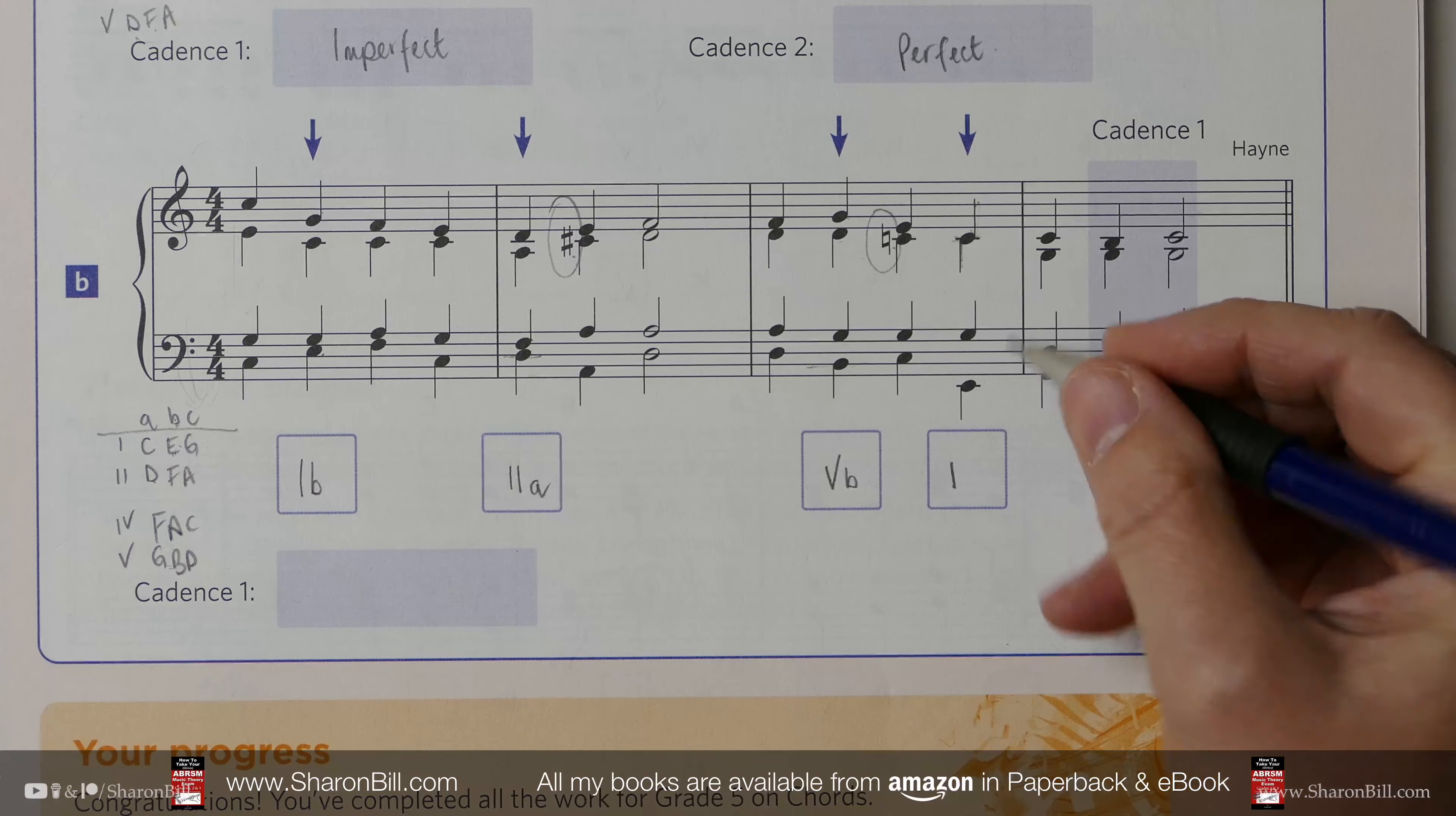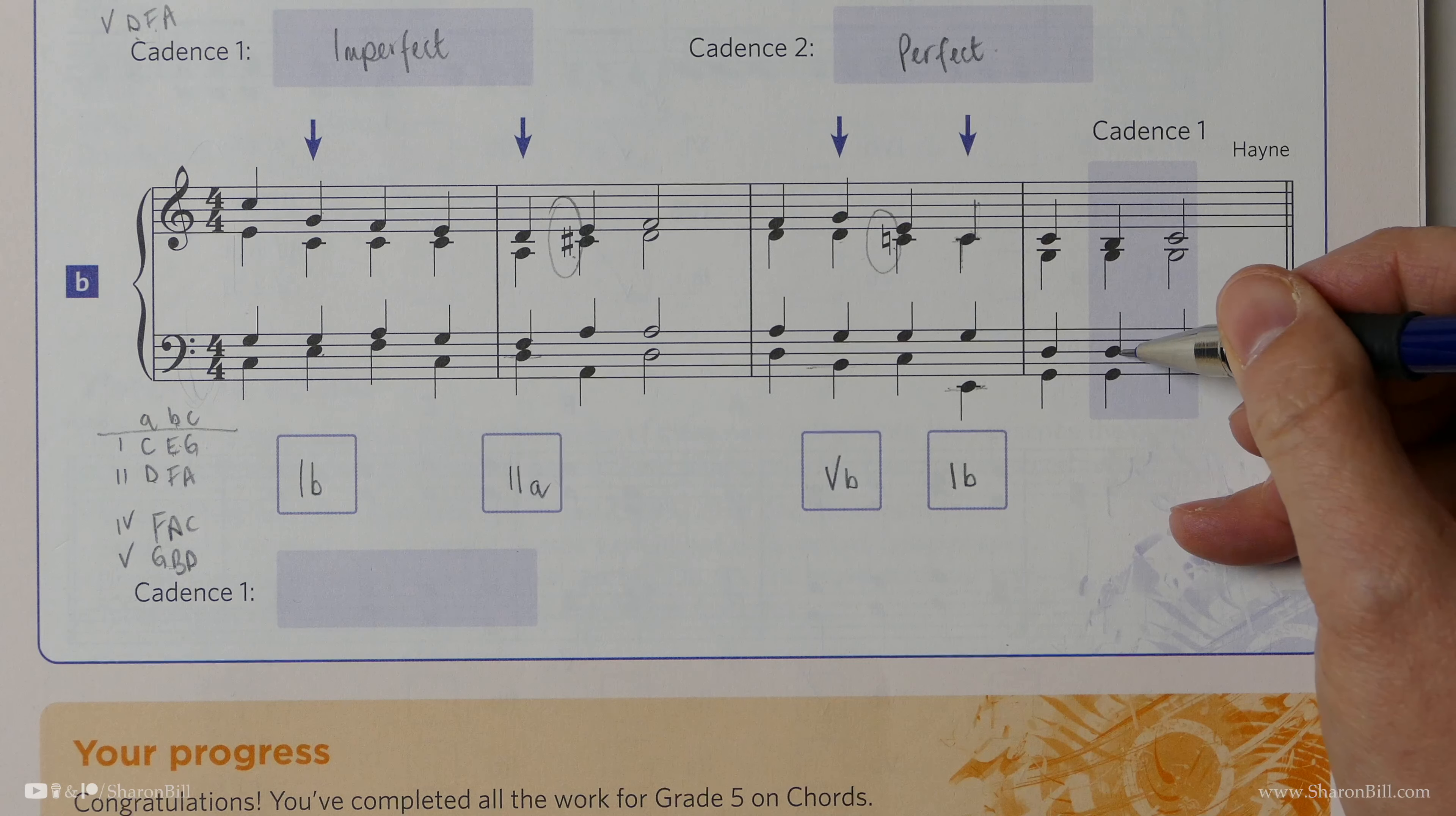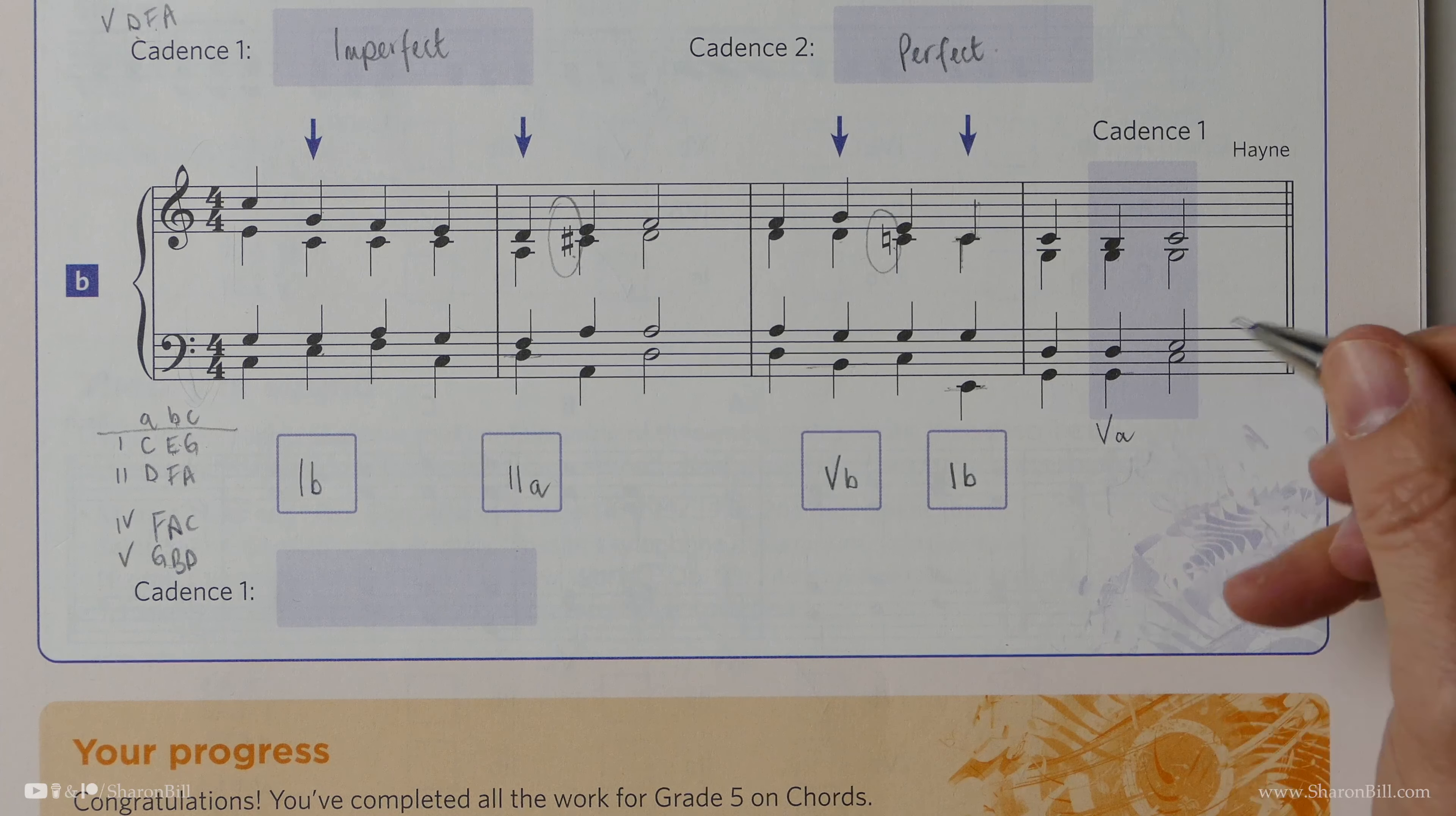A C, E, G chord. However, E is the bottom note. So it's a first inversion. It's a 1B. But we still need to explain these chords here to be able to properly describe our cadence. We have G, D, G, B. That's a chord 5. We don't really need to explain what position the chord is in. But we may as well just be thorough. It's a root position because G is the bass. It's a 5A.